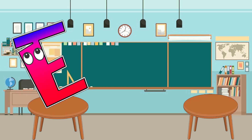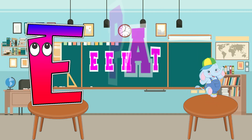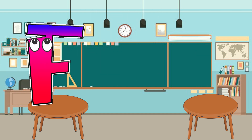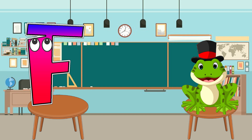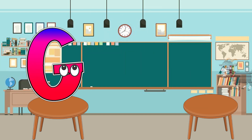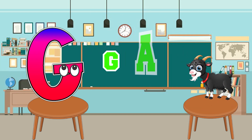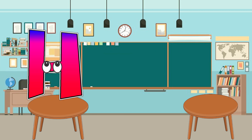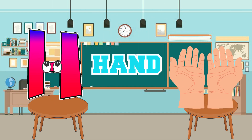E is for elephant, e-e-elephant. F is for frog, f-f-frog. G is for goat, g-g-goat. H is for hand, h-h-hand.